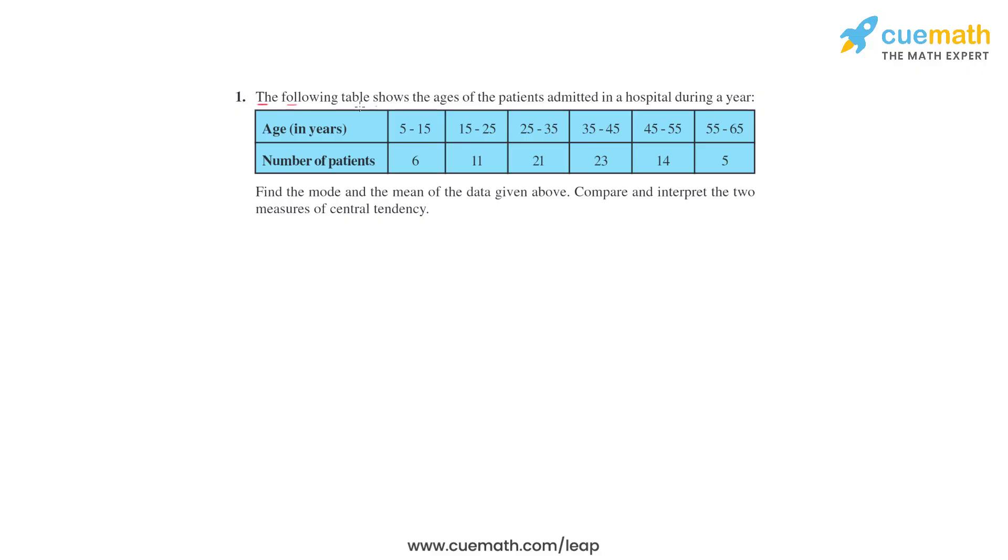First question: the following table shows the ages of patients admitted in a hospital during a year. Ages from 5 to 15, 6 patients; 15 to 25, 11 patients; 25 to 35, 21 patients; 35 to 45, 23 patients; 45 to 55, 14 patients; and 55 to 65, 5 patients. Then find the mode and the mean of the data given above. Compare and interpret the two measures of central tendency.